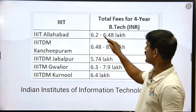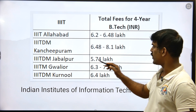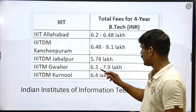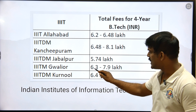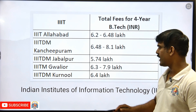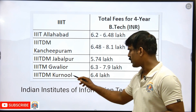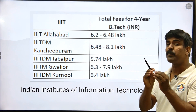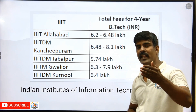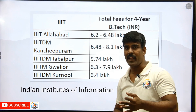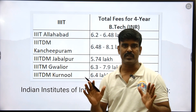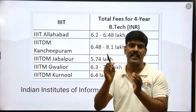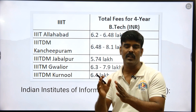The various fee ranges are: 6.2 lakhs, 6.48 lakhs, 8.2 lakhs, 5.74 lakhs, 7.9 lakhs, 8.3 lakhs, and 6.4 lakhs. IIT, NIT, IIIT — all these are government institutions. So this is the fee structure, up to around 10 lakhs.